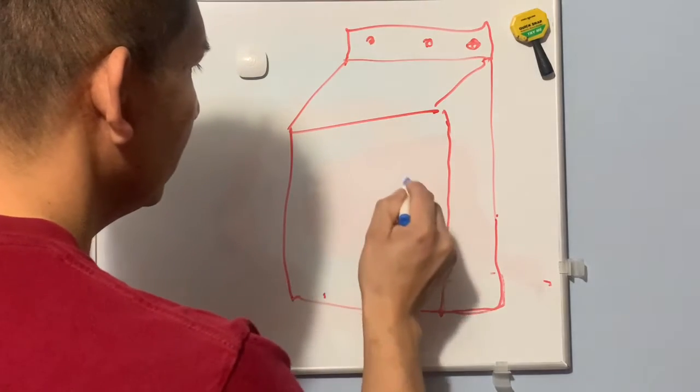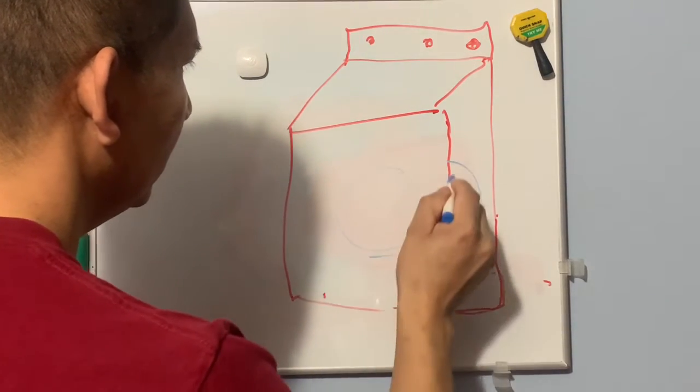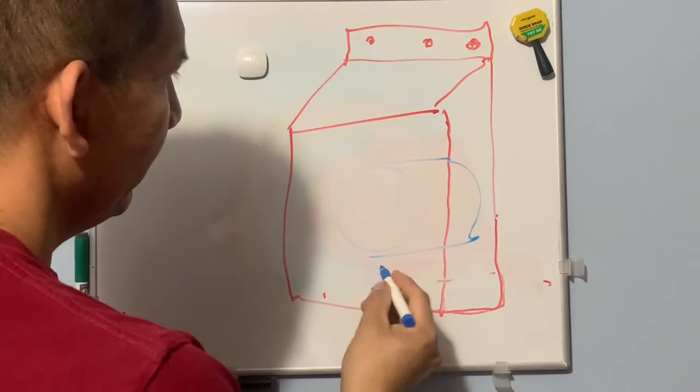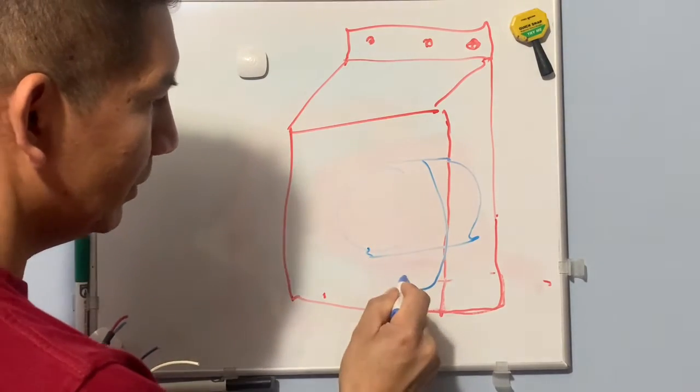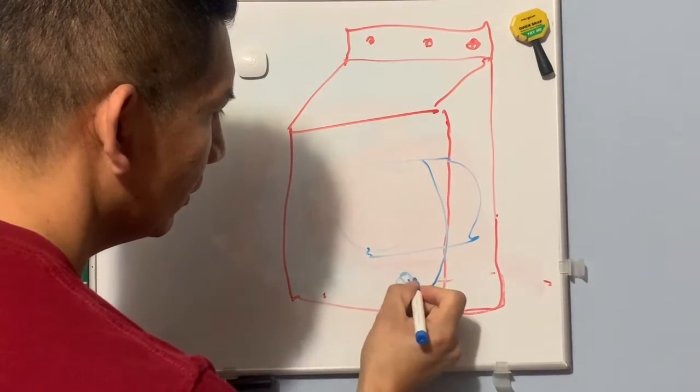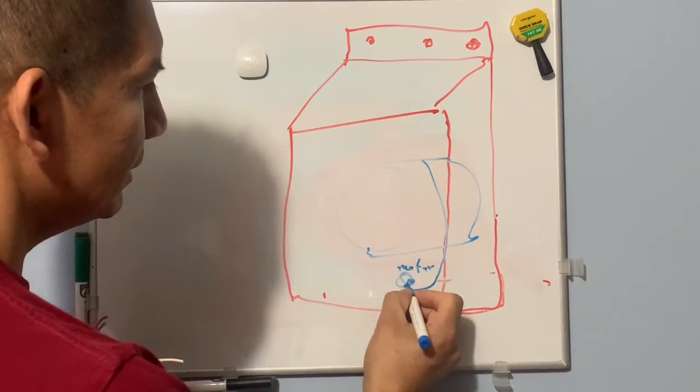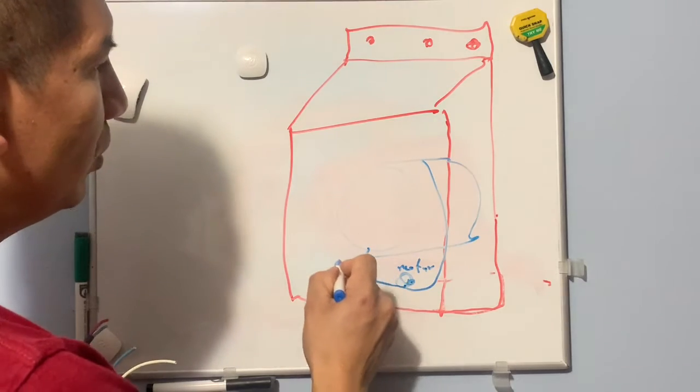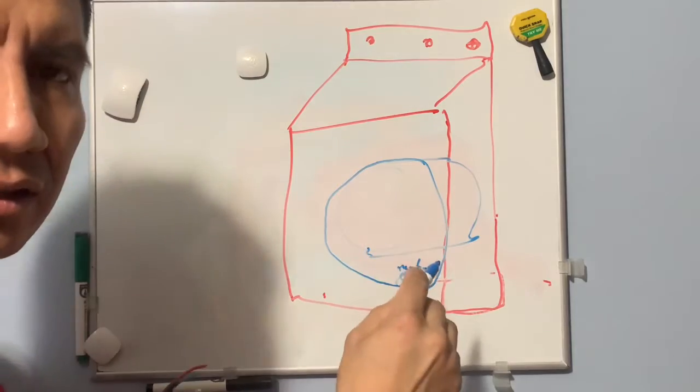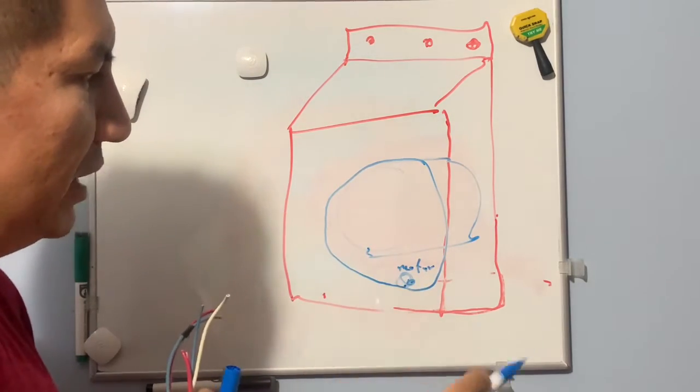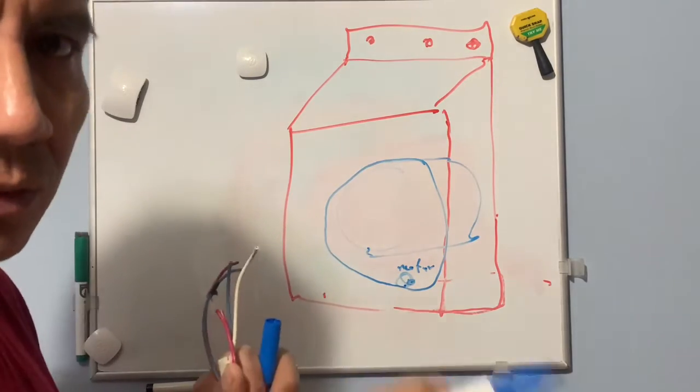Right now we have the drum here, and we have a belt right here, and we have the motor. The belt comes through the motor by the pulley and goes around the drum. The drum spins because the motor spins too, so both work together.